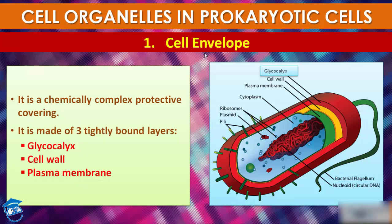Although each layer of the envelope performs a distinct function, they act together as a single protective unit. Bacteria can be classified into two groups on the basis of the difference in cell envelope and the manner in which they respond to the staining procedure developed by Gram — for example, Gram-positive bacteria and Gram-negative bacteria.